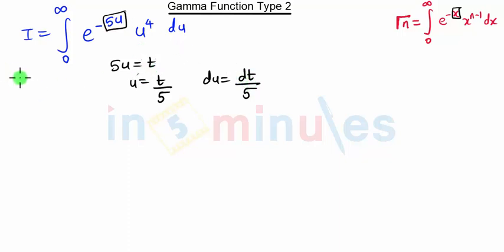Since we are changing the variable, our limits of integration will also change. When we put u equals 0, we get t equals 0. When we put u equals infinity, we also get t equals infinity.